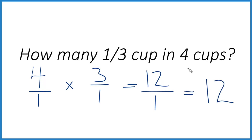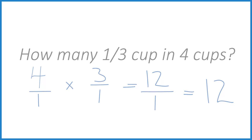So you'd need 12 of these one-third cup measures to make four cups. That means there are 12 one-third cup measures in four cups. That's it. This is Dr. B, and thanks for watching.